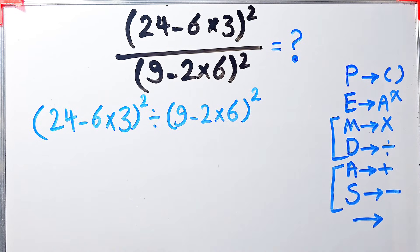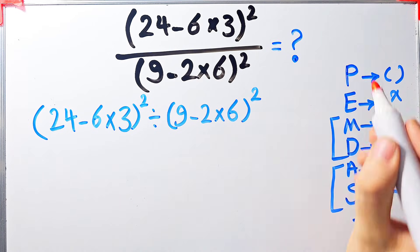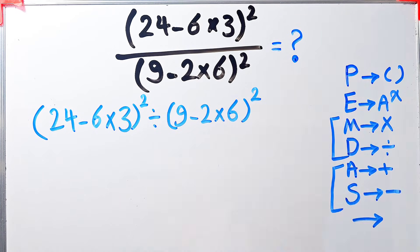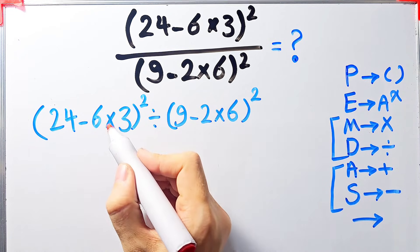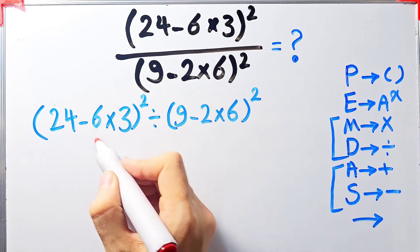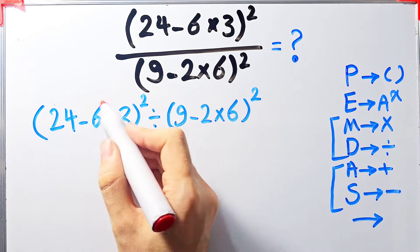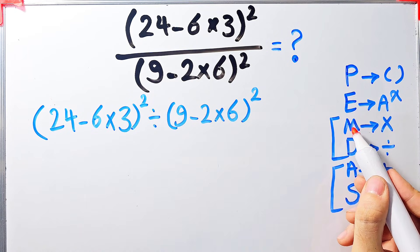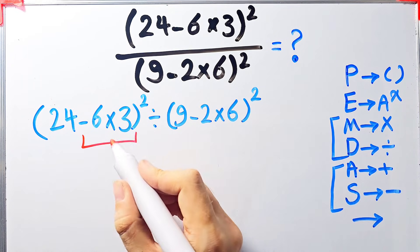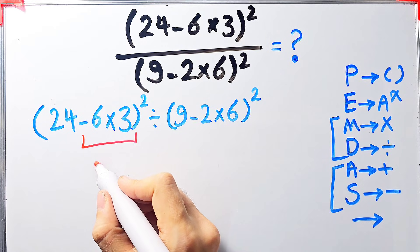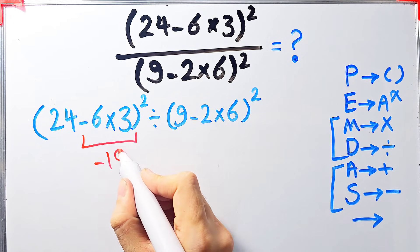According to the PEMDAS rule, first we simplify the parenthesis. Inside the first parenthesis we have subtraction and multiplication. First we do the multiplication because it has higher priority than subtraction. Negative 6 times 3 equals negative 18.